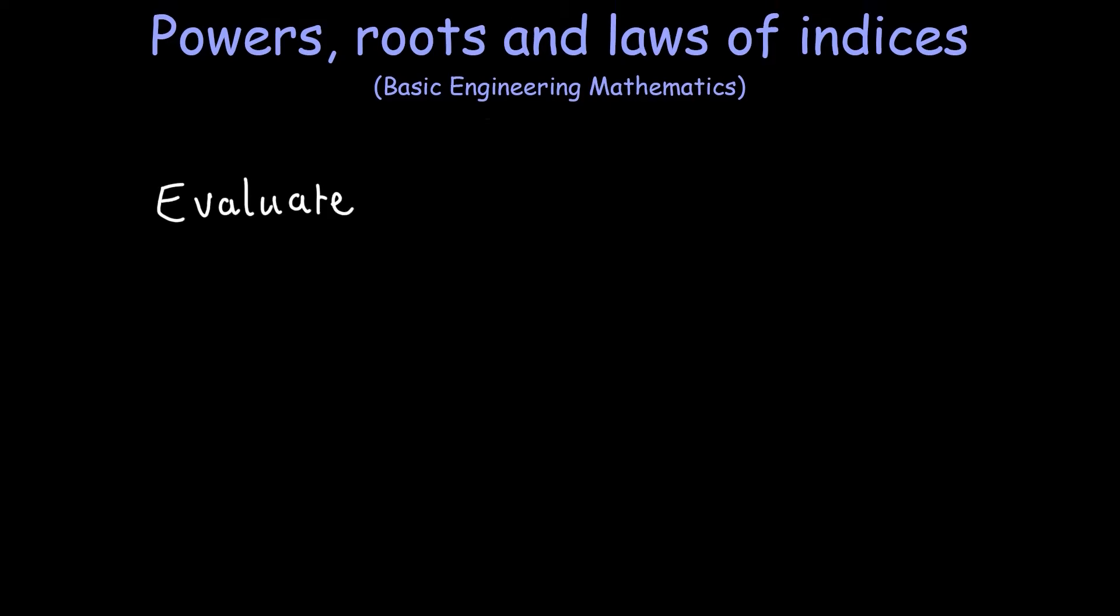So let's try an example. Let's evaluate 3 to the power of 4. 3 to the power of 4 is simply 3 multiplied by itself 4 times.